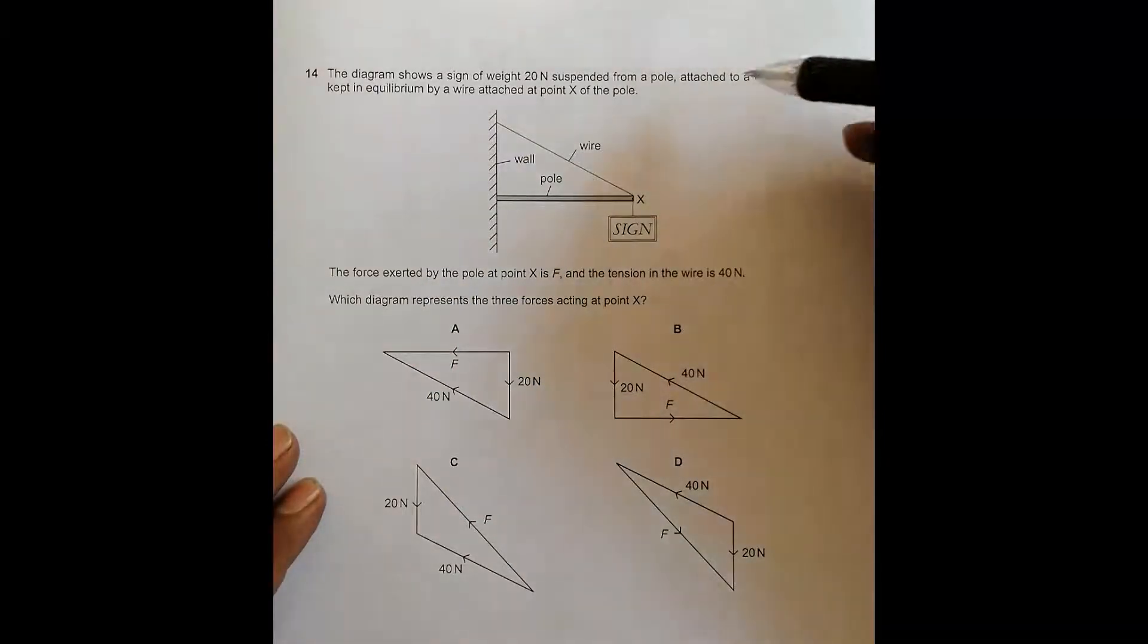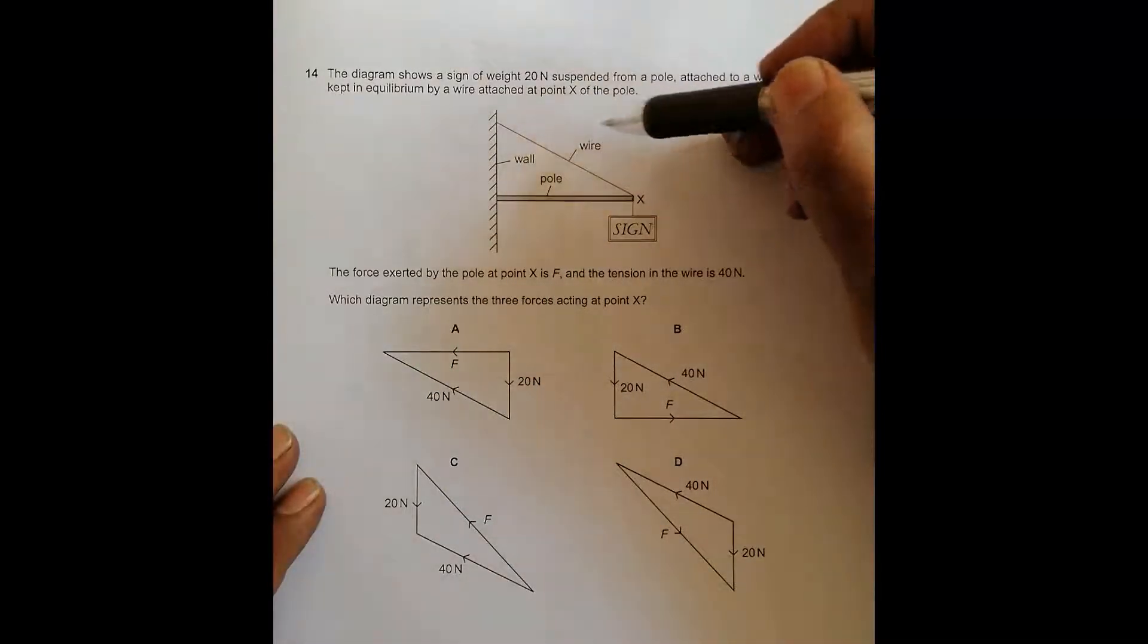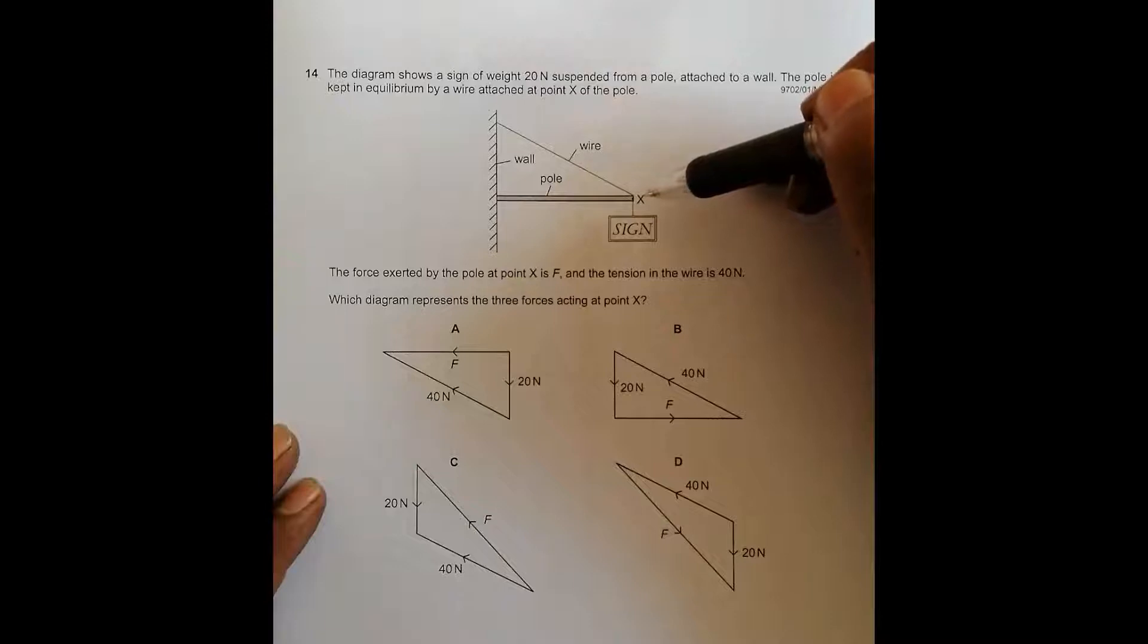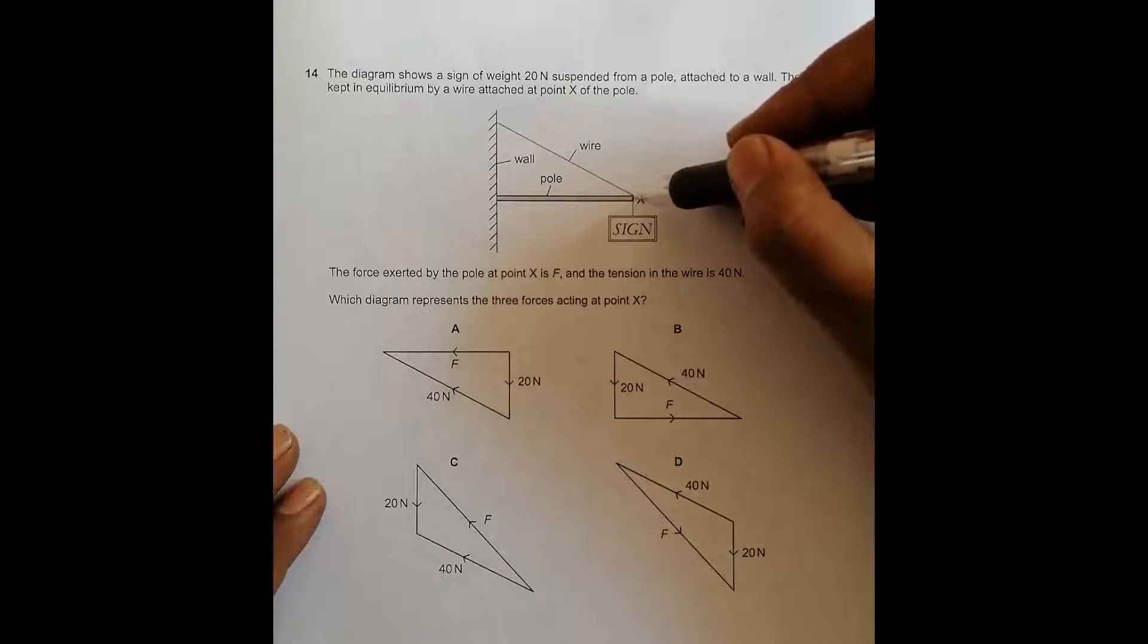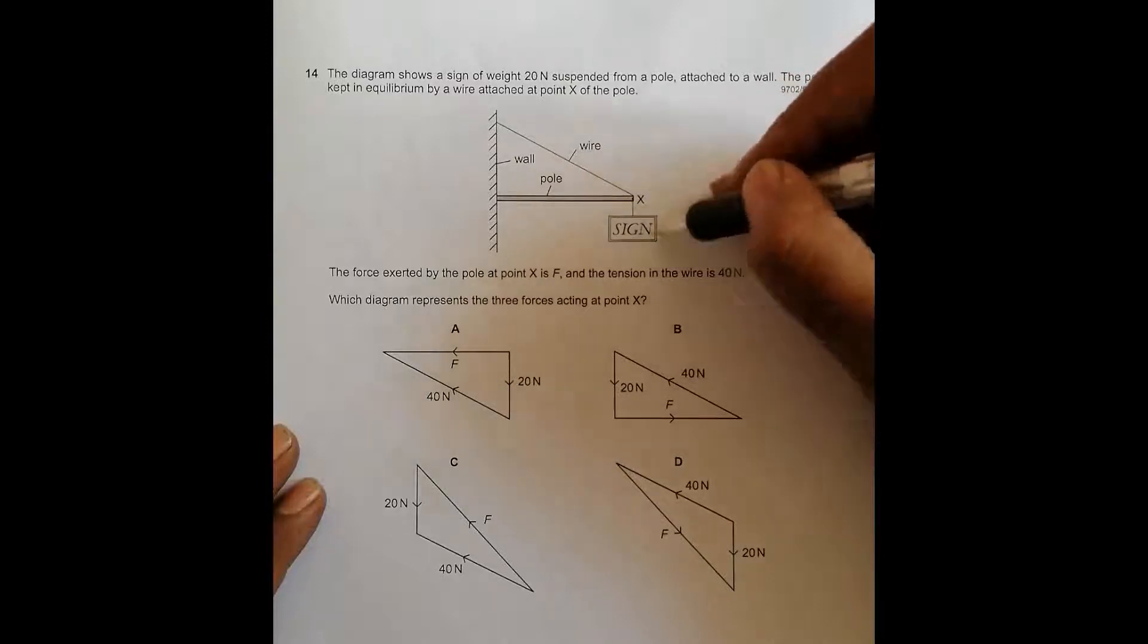The pole is kept in equilibrium by a wire attached at point X of the pole. So we have a wire here, point X here, and from X this sign is being suspended.